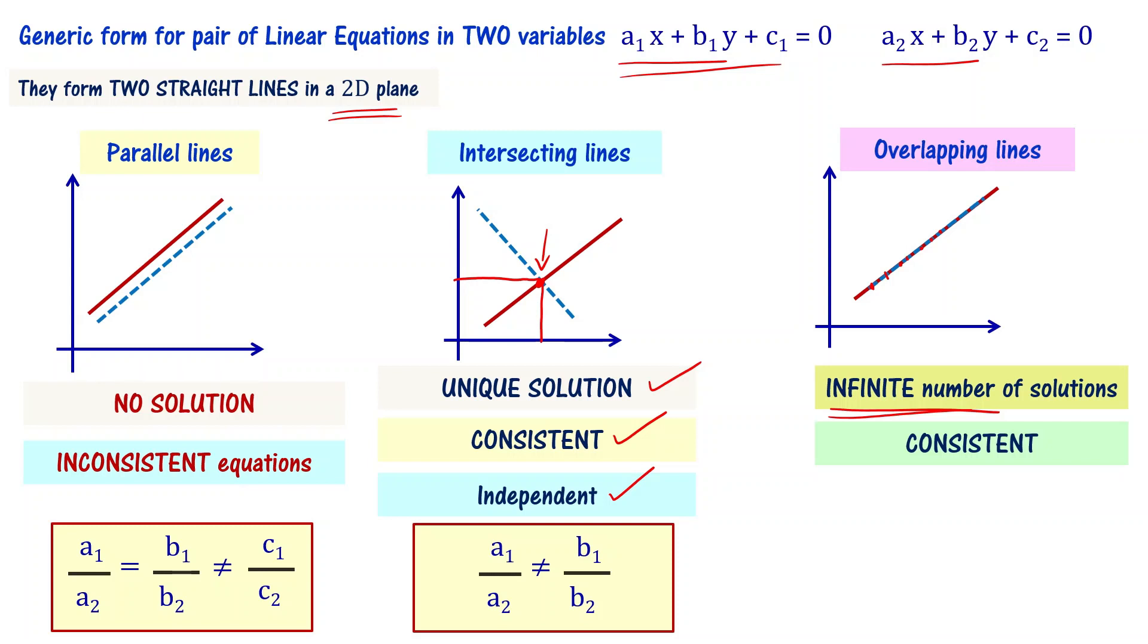These equations are said to be consistent equations. But please note here, these equations are called dependent set of linear equations. The two equations have coefficients related as a1 by a2 equal to b1 by b2 that is equal to c1 by c2, which means the two equations are essentially the same. That's why those are called dependent set of linear equations.